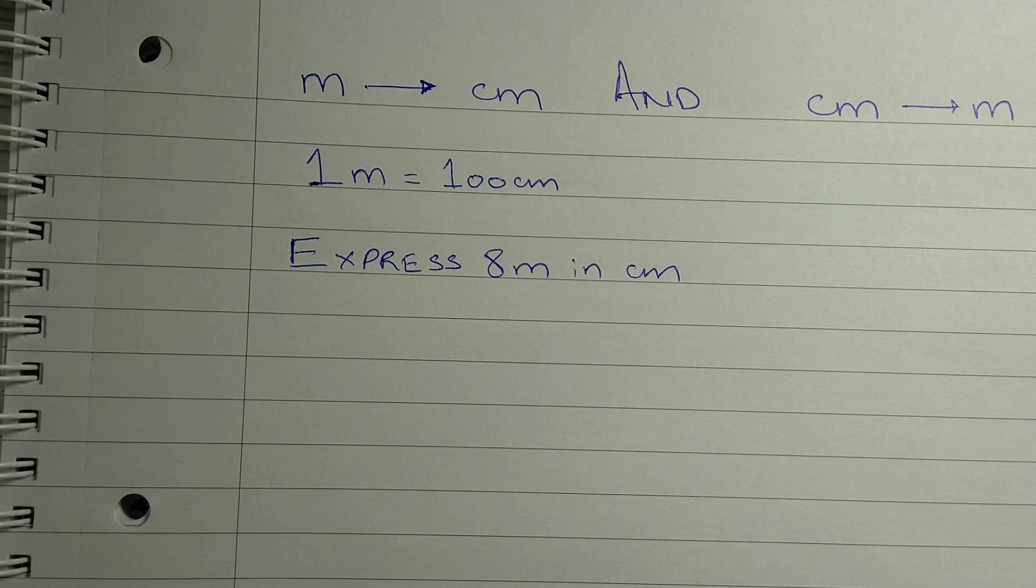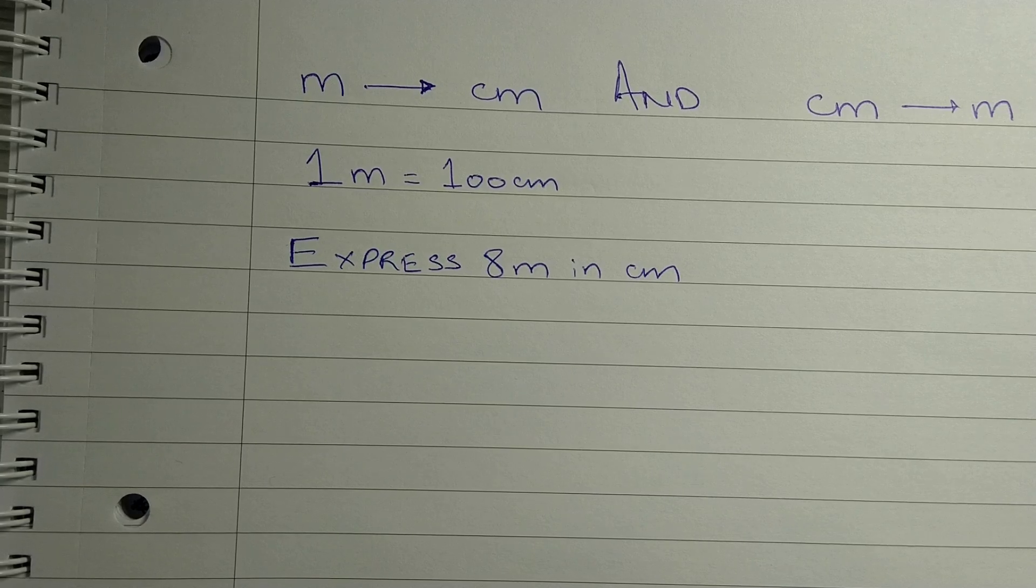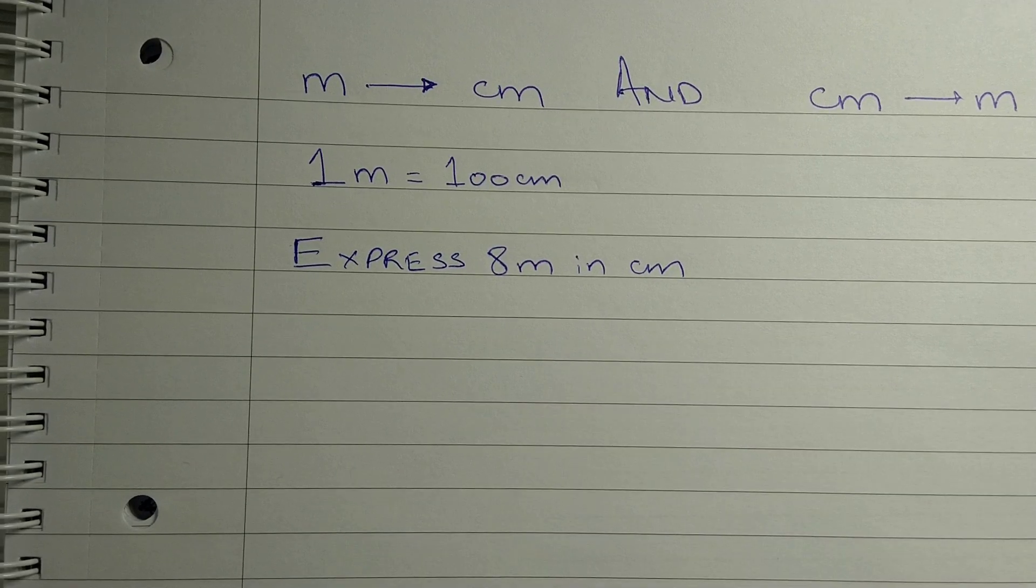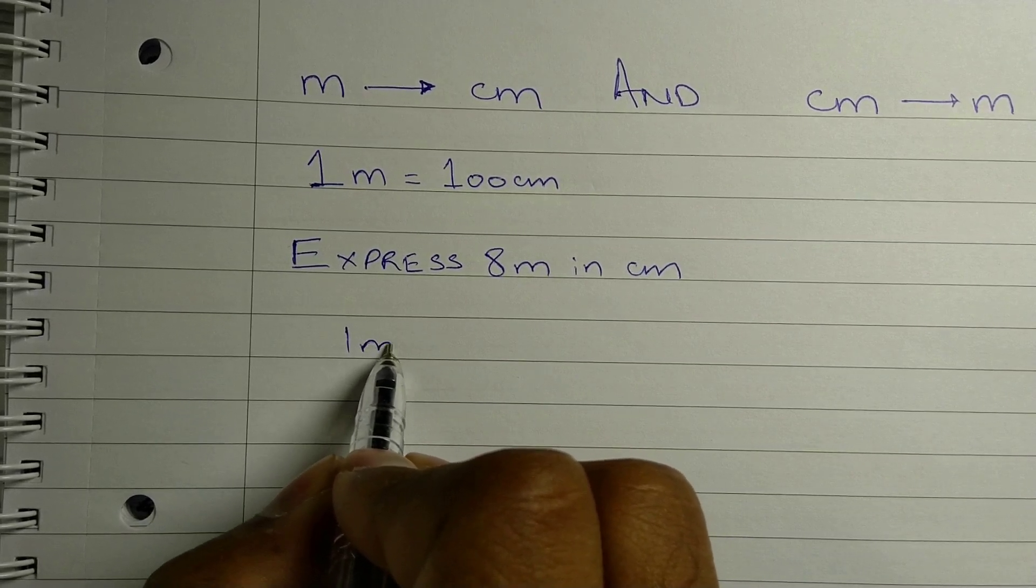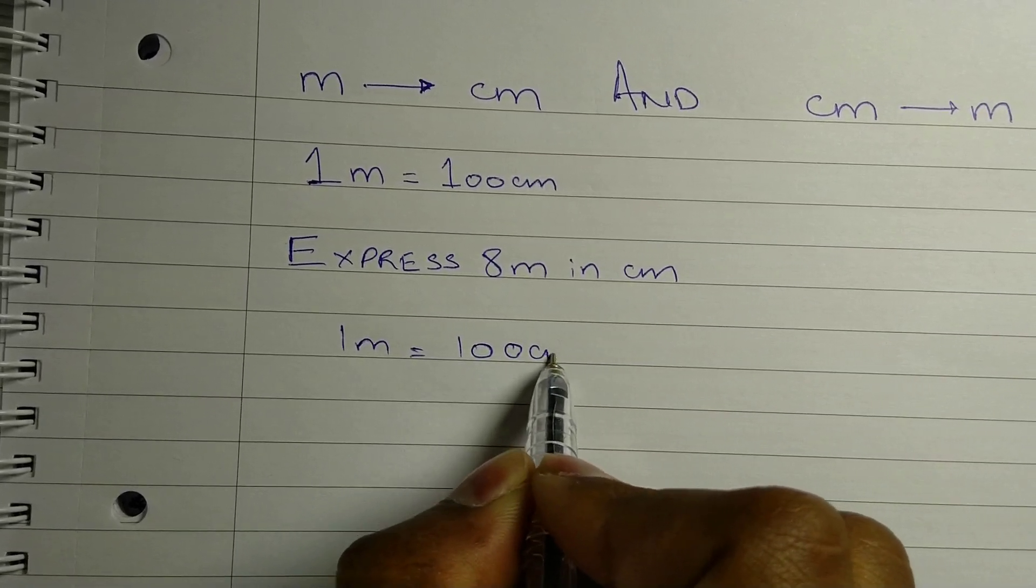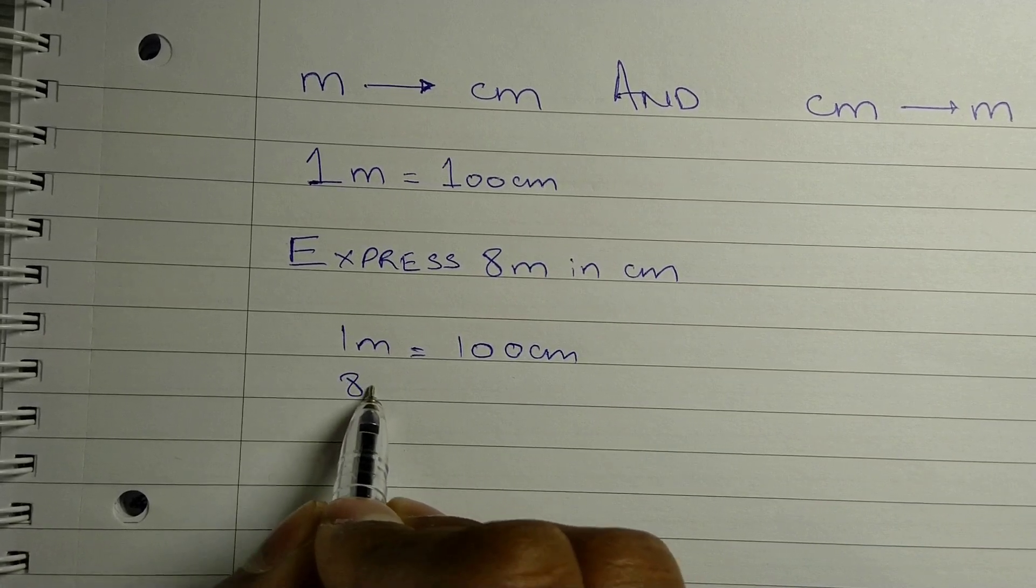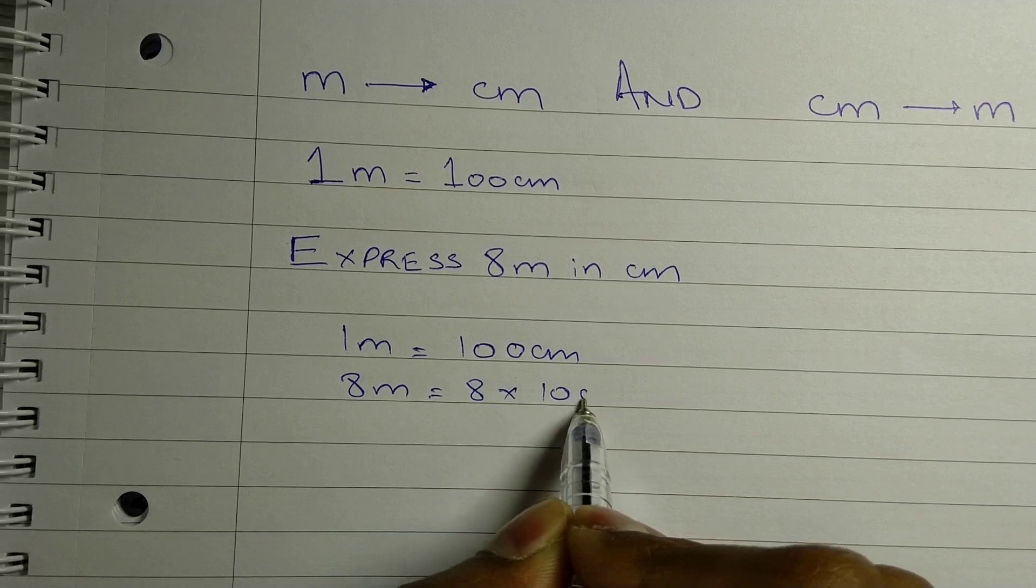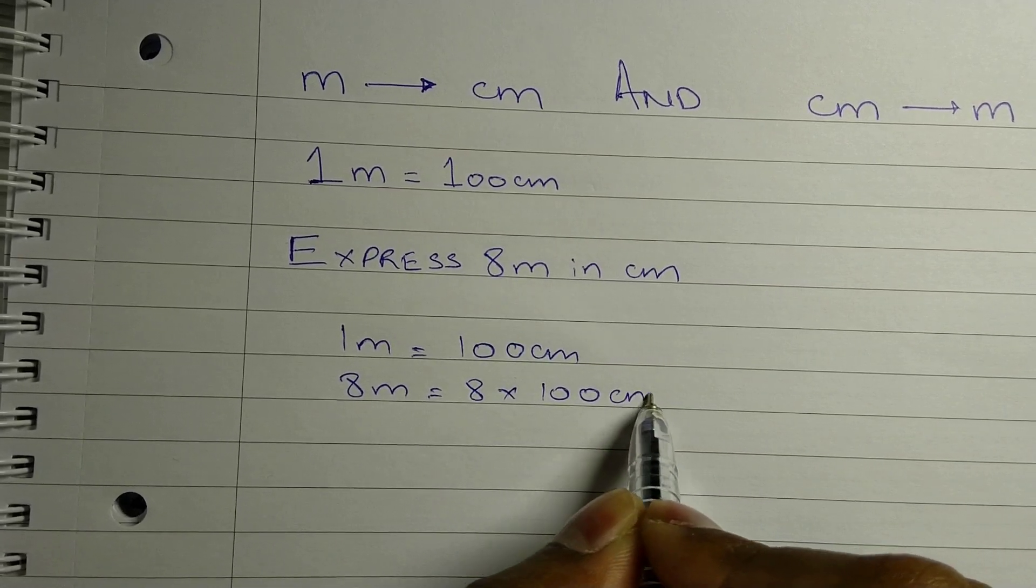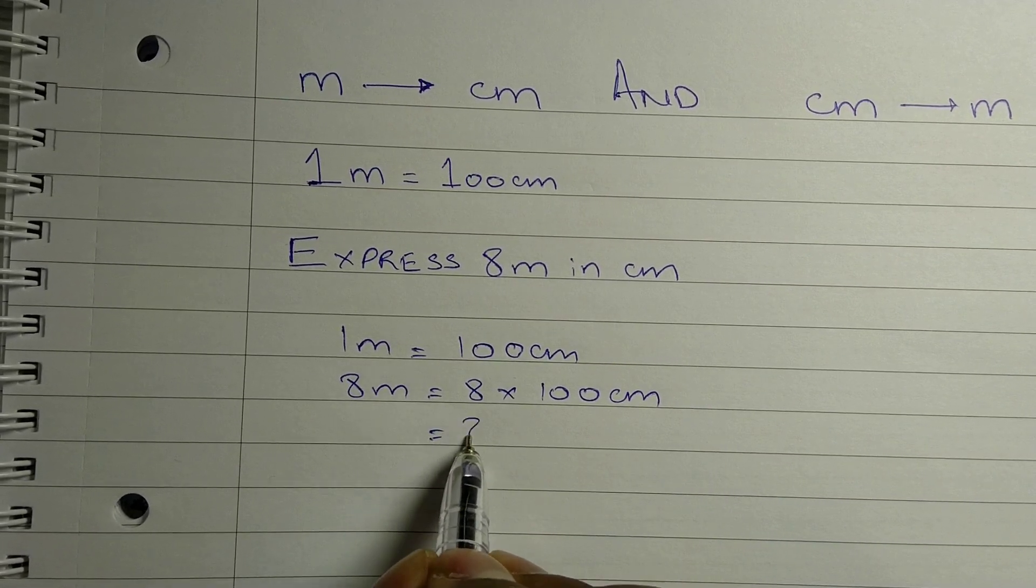For example, let's convert eight meters into centimeters. We know the basic relation: one meter equals 100 centimeters. So eight meters will be eight times 100 centimeters, which equals 800 centimeters.